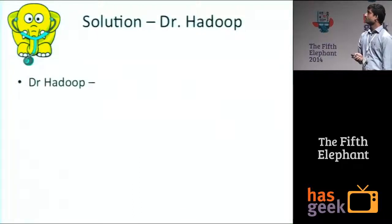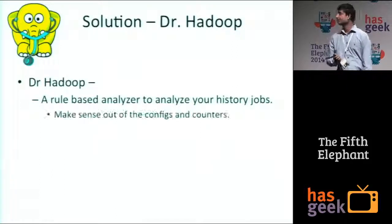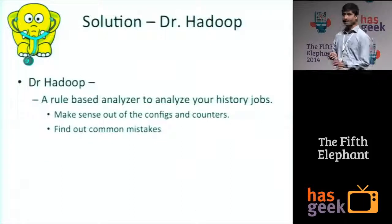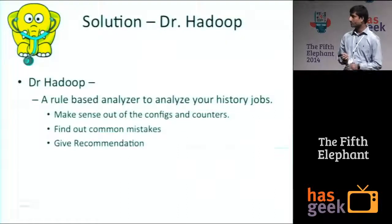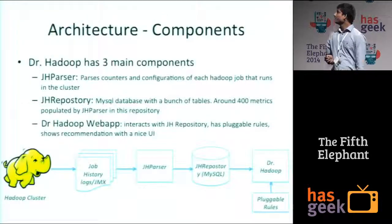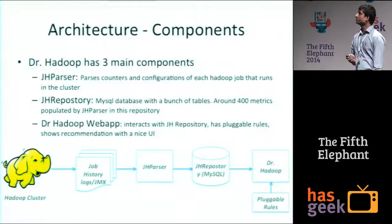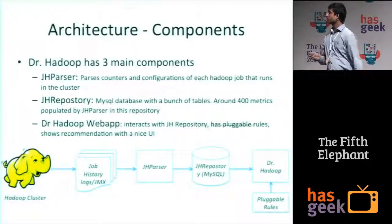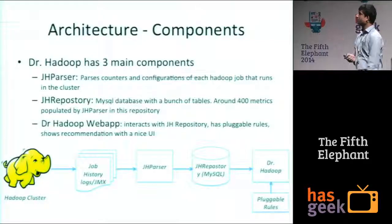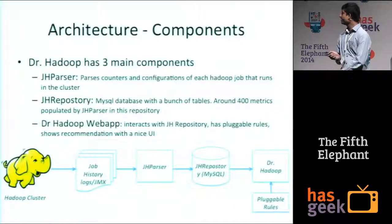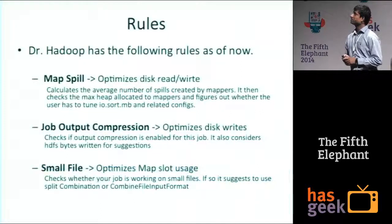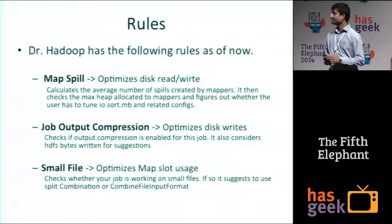So we developed this tool: Dr. Hadoop. It is basically a rule-based analyzer that makes sense out of the configuration, counters that Hadoop provides, and the logs. It finds common mistakes using predefined rules. It also gives recommendations on all the rules, shows the severity of the recommendations, and leaves the user happy. The data flow is: we collect all sorts of logs from Hadoop — job history logs, JMX metrics, and all the metadata — using a component called jpasser, store it in a repository, and finally there is a web app called Dr. Hadoop which has pluggable rules in it.